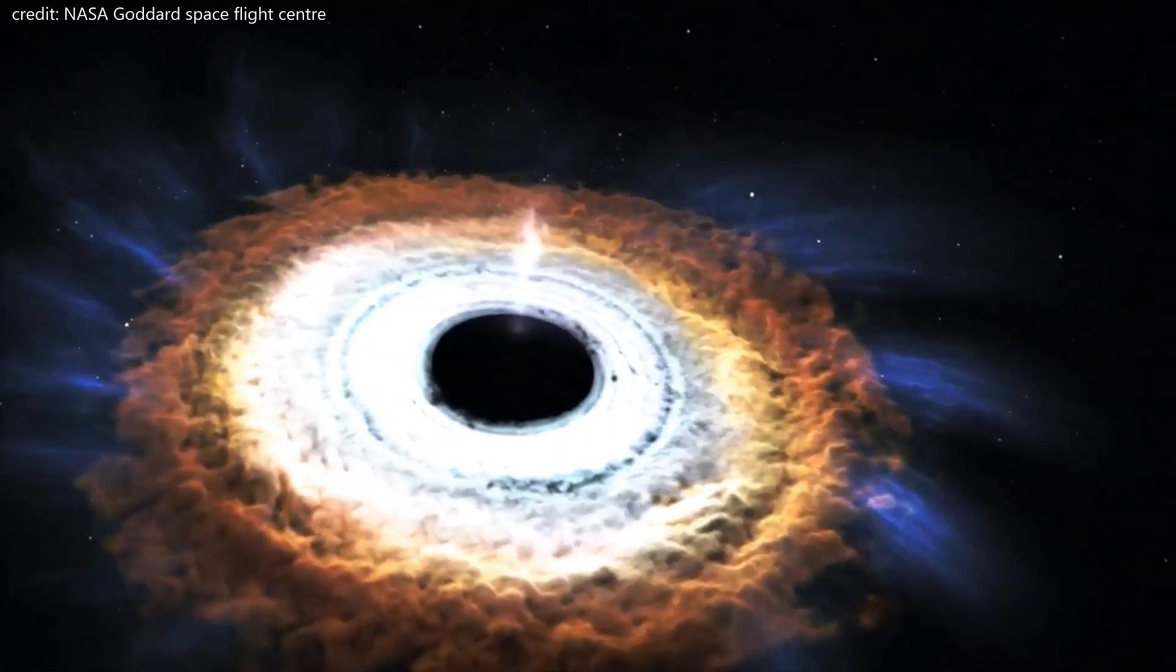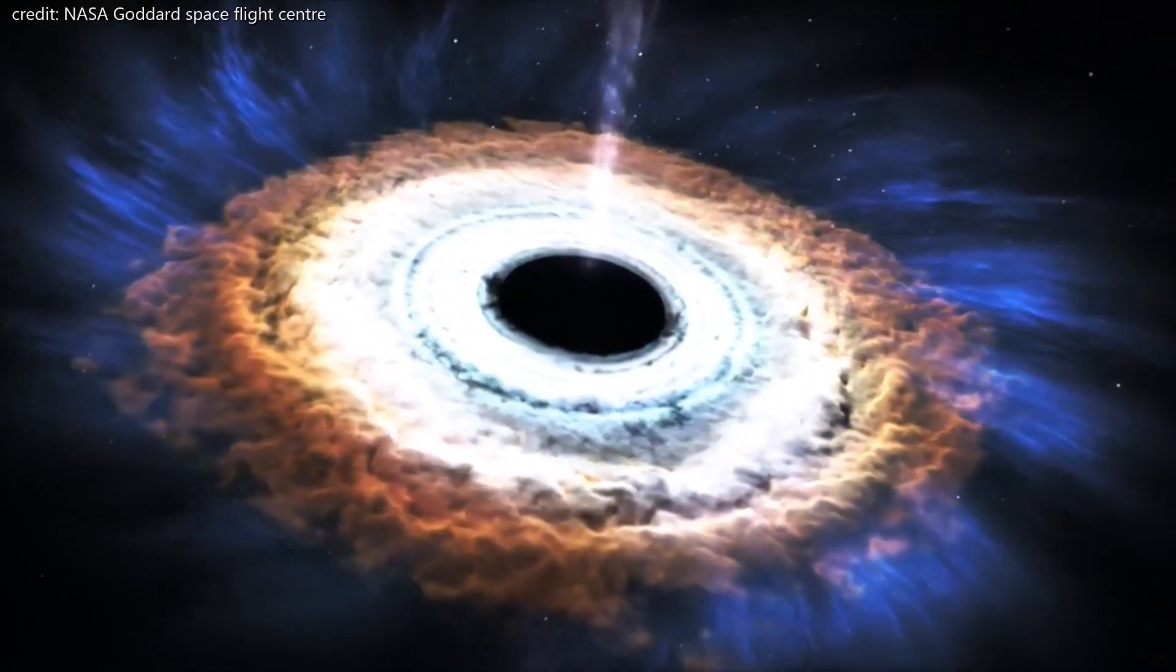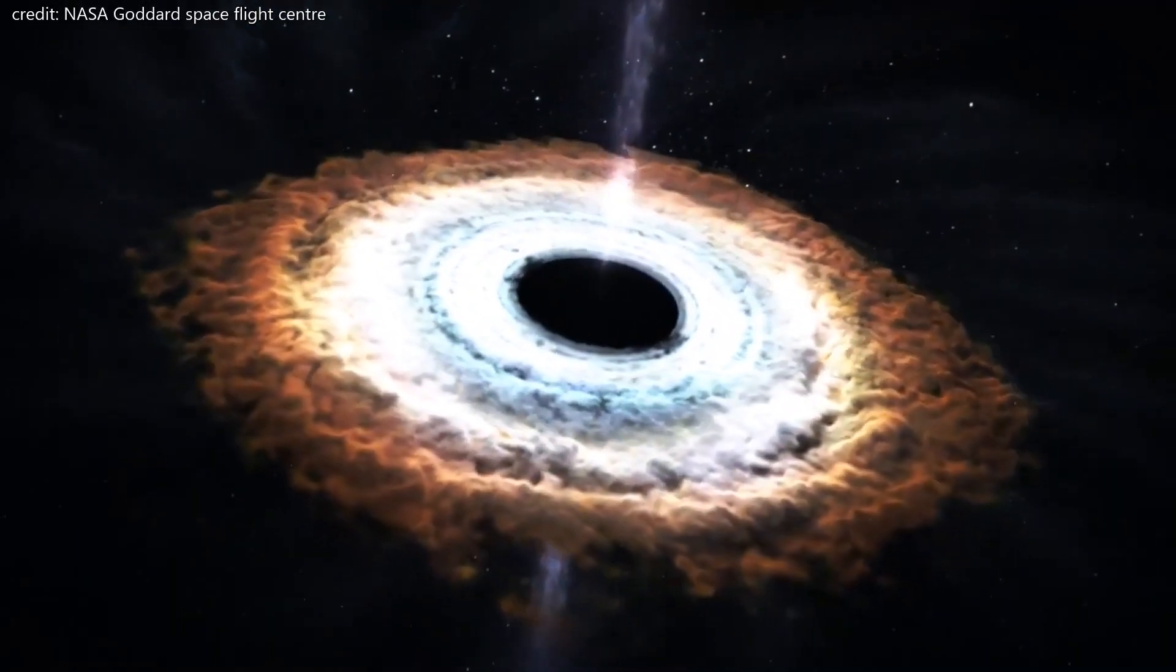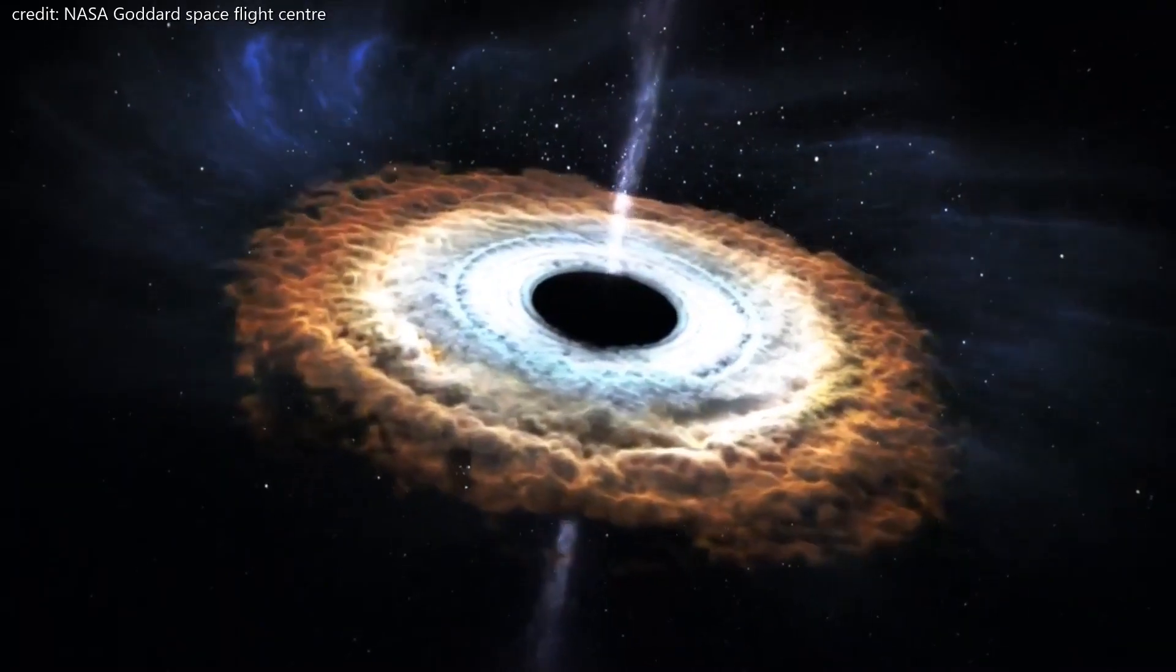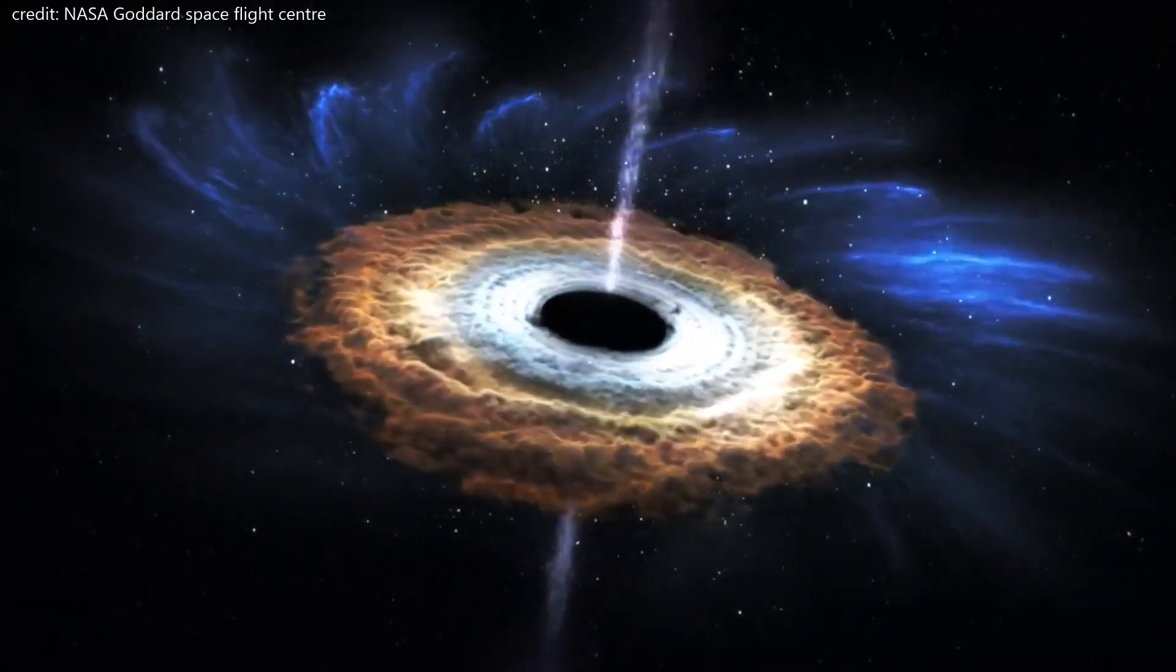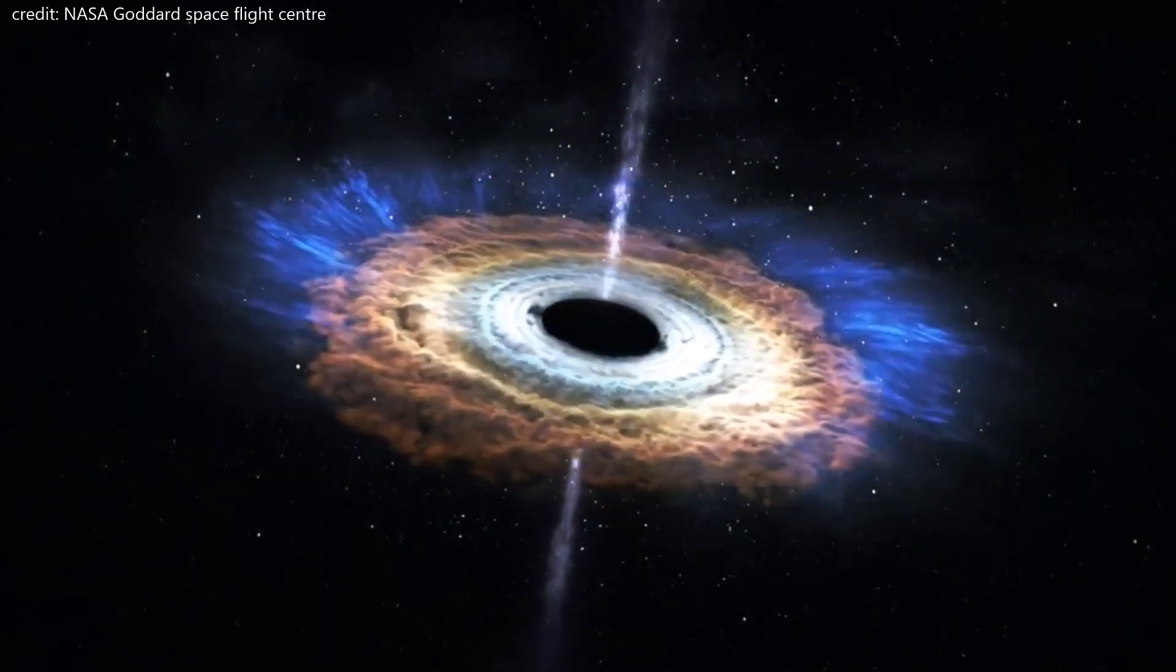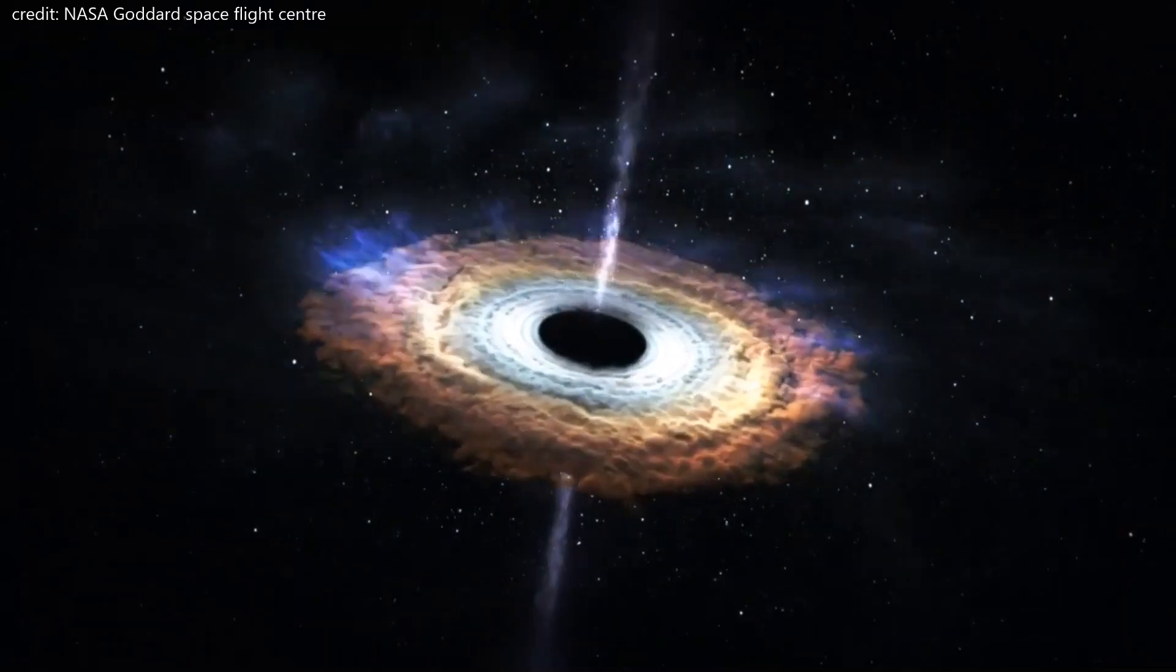Although light cannot escape from a black hole itself, some signals can break free around its edges. While some dust and gas fall into the black hole, other particles are accelerated away from it near the speed of light. The particles stream away from the black hole in jets above and below it, transported by one of the most powerful particle accelerators in the universe.